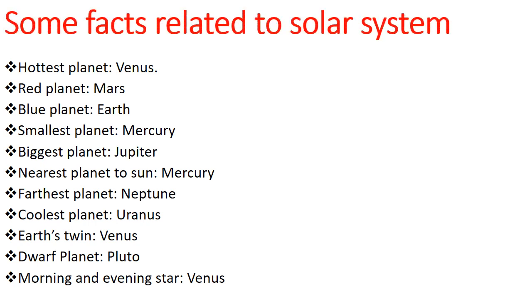Some facts related to solar system: Hottest planet is Venus, red planet Mars, blue planet is Earth, smallest planet Mercury, biggest planet Jupiter, nearest planet to sun is Mercury, farthest planet Neptune, coolest planet Uranus, Earth's twin Venus, dwarf planet is Pluto, morning and evening star is Venus.